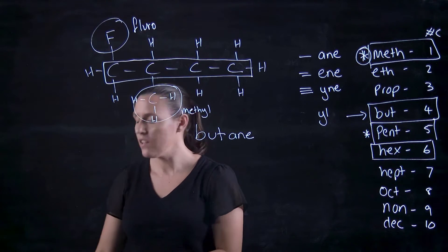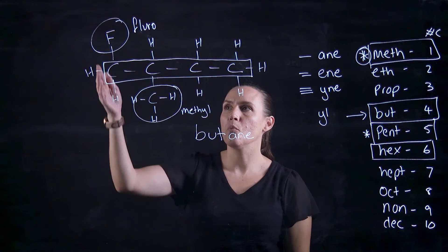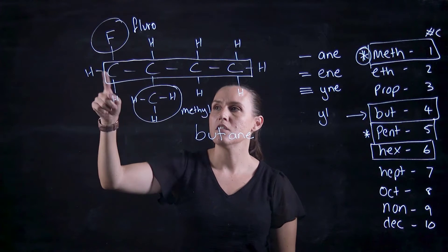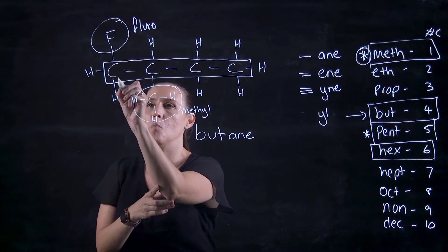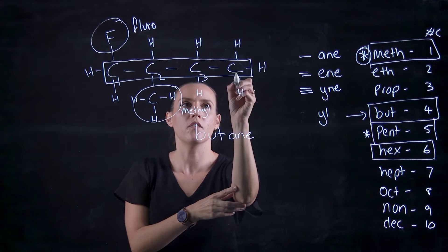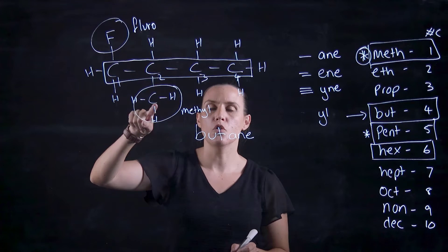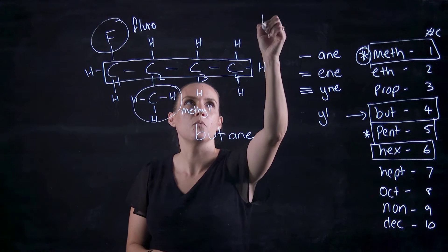Got a bit keen there. So we want these two to be on the lowest possible number. So if I number from this carbon here, this can be 1, 2, 3, 4. I have a 1-fluoro, 2-methyl. So 1, 2.